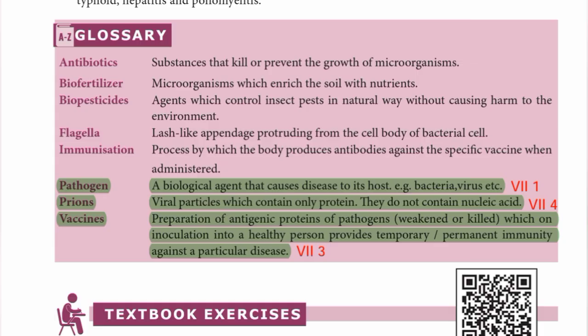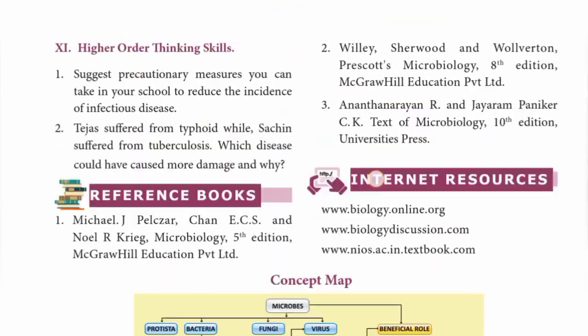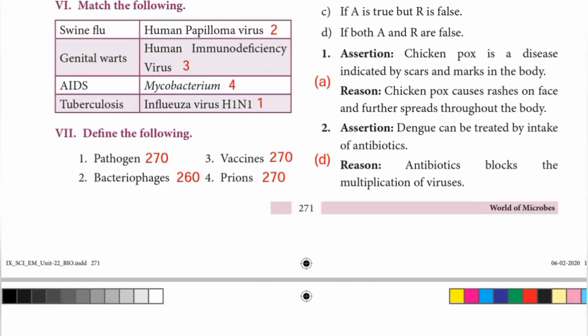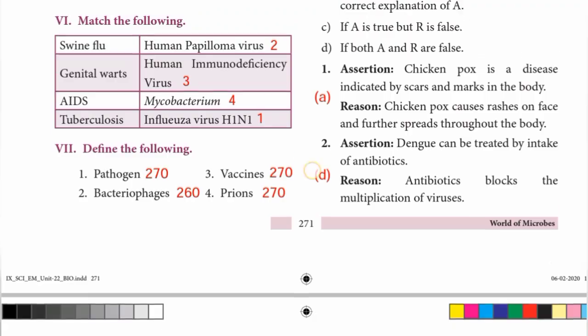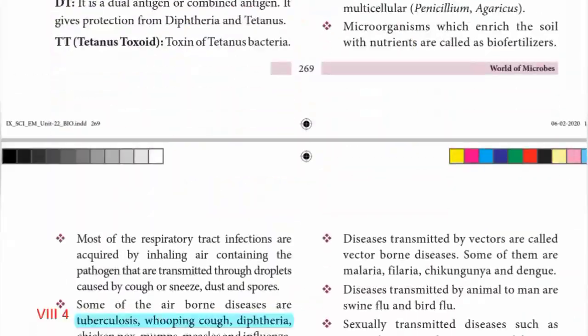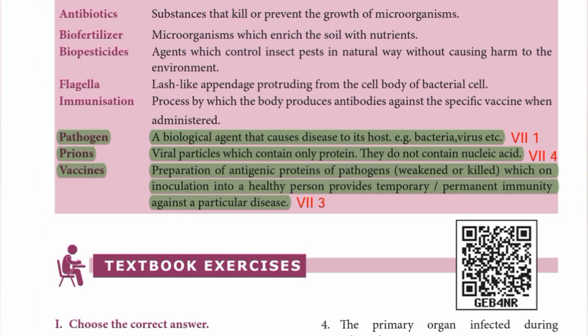Third — Vaccines. Page 270: A preparation of antigenic proteins of pathogens, weakened or killed, which on inoculation into a healthy person provides temporary or permanent immunity against a particular disease. Fourth — Prions: These contain only protein and do not contain nucleic acid.